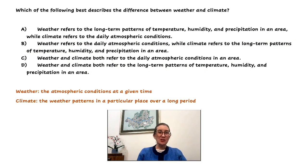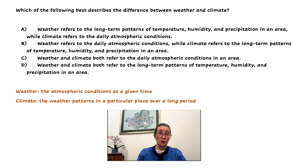Which of the following best describes the difference between weather and climate? A, weather refers to the long-term patterns of temperature, humidity, and precipitation in an area, while climate refers to the daily atmospheric conditions. B, weather refers to the daily atmospheric conditions, while climate refers to the long-term patterns of temperature, humidity, and precipitation in an area. C, weather and climate both refer to the daily atmospheric conditions in an area. Or D, weather and climate both refer to the long-term patterns of temperature, humidity, and precipitation in an area.